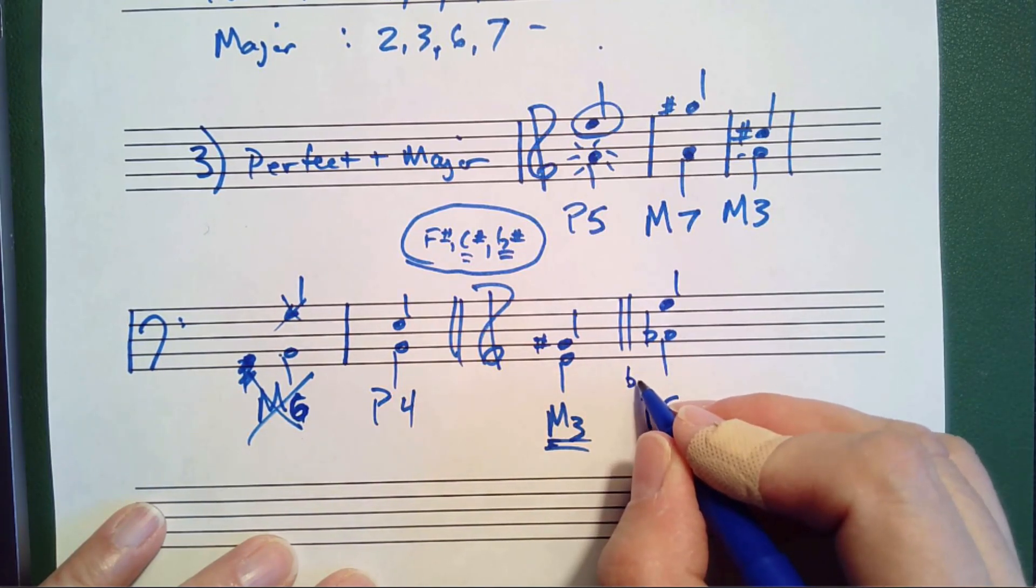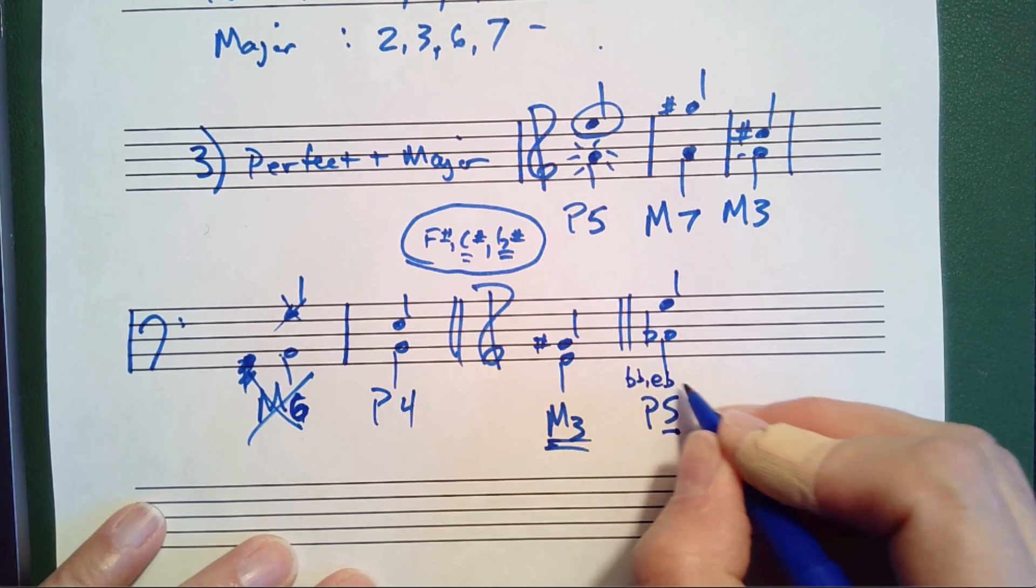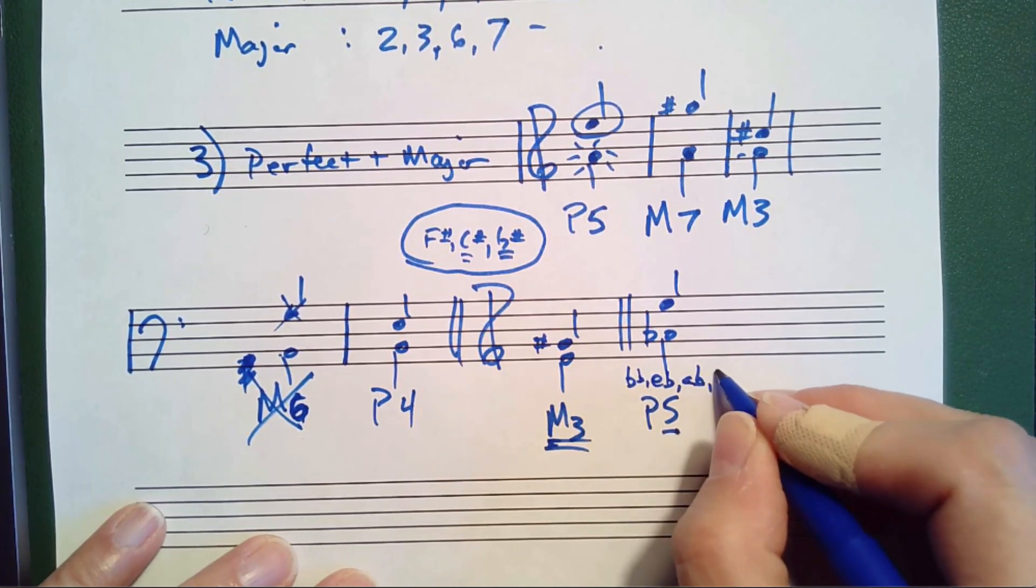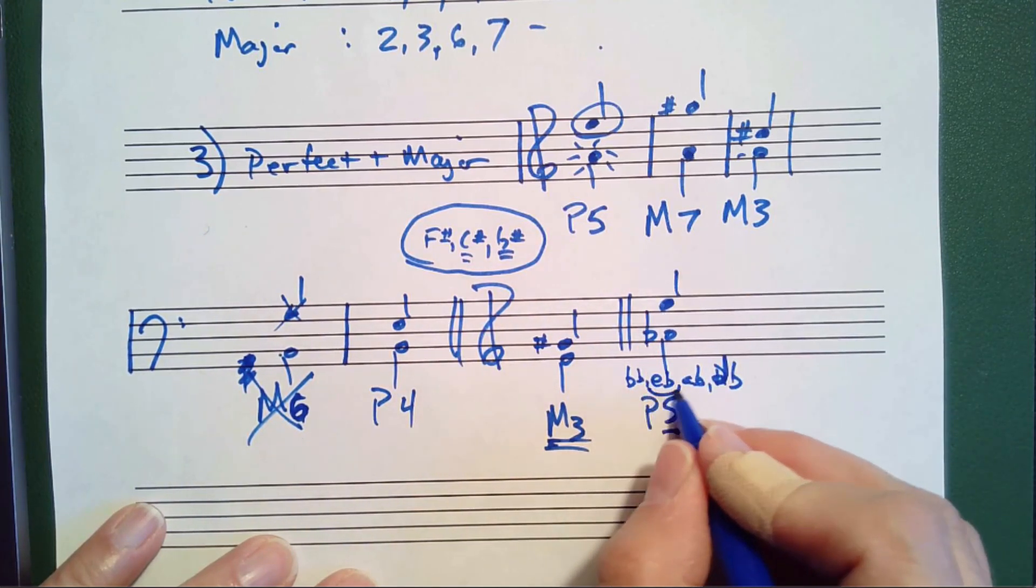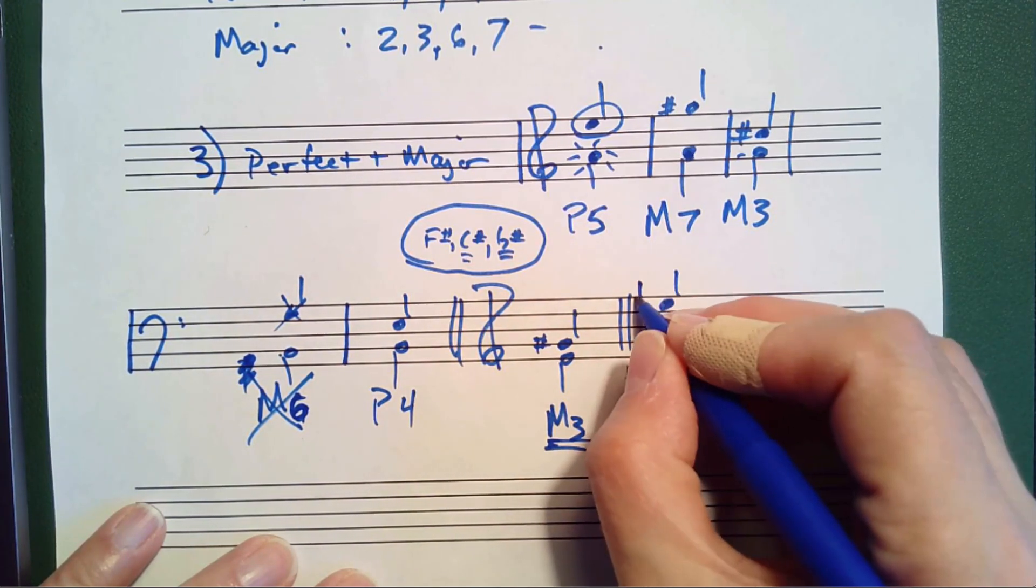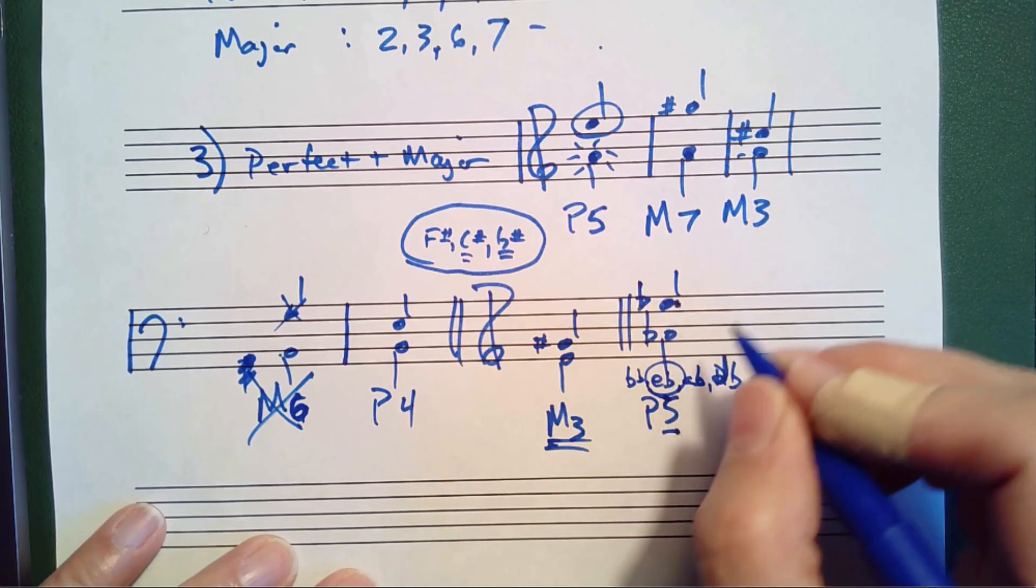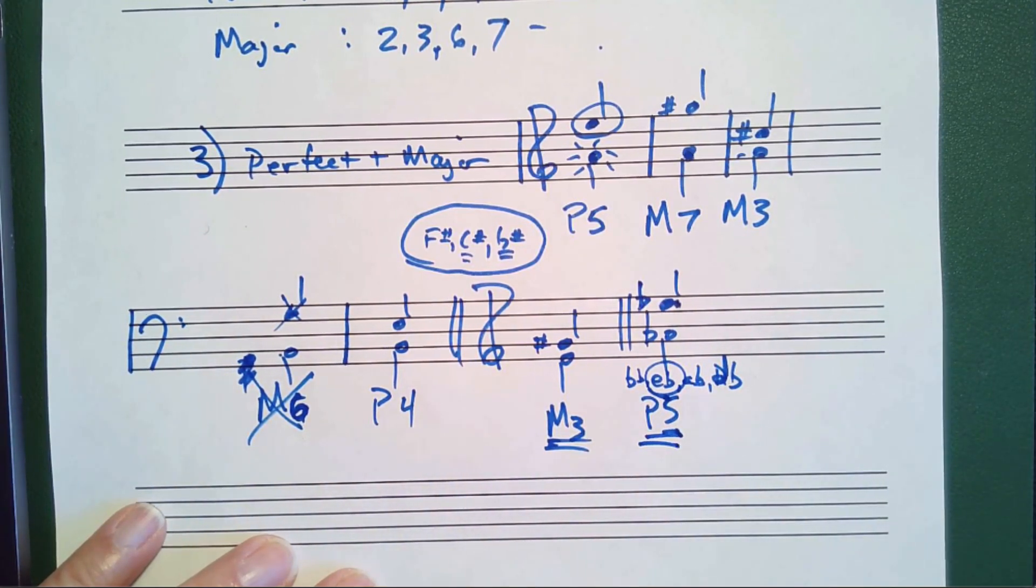Now we think of the key signature of the bottom note, which is B flat, E flat, A flat, D flat. And you see how there's E flat in the key signature. So note E flat will be the perfect fifth above A flat.